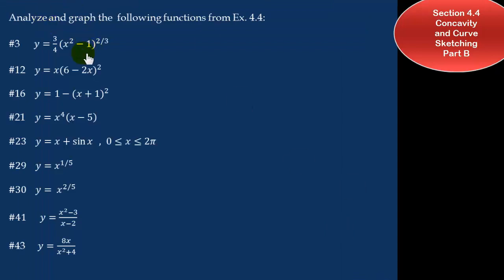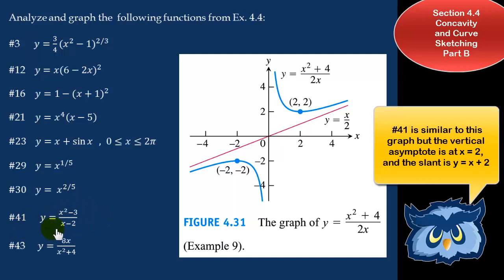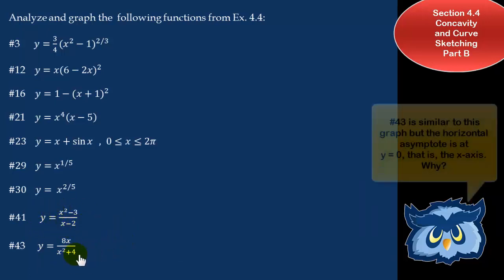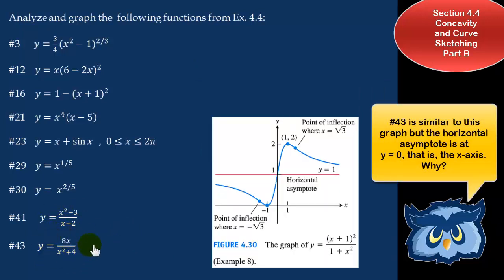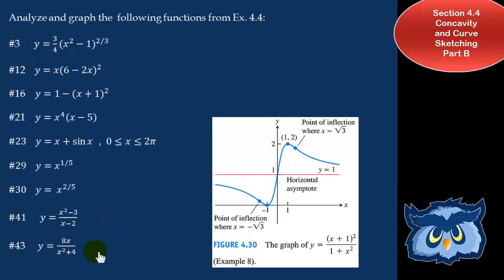Here are some functions you can try. You can try number 3 and number 21. We have done 29 and 30 — you can also work on number 30, which is very similar to y equals x to the two-thirds. Number 41 is very similar to our previous function with a vertical asymptote and a slant asymptote. Number 43 is very similar to the previous slides as well. Try to graph all these functions.